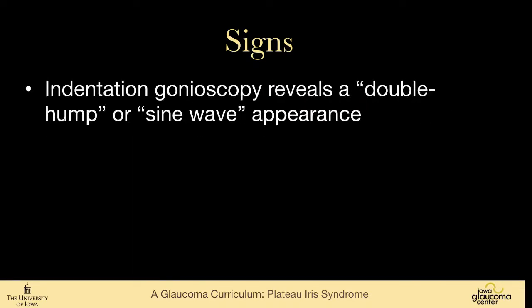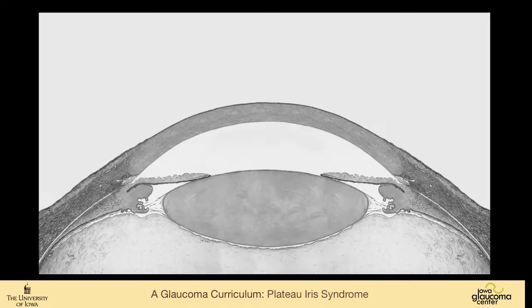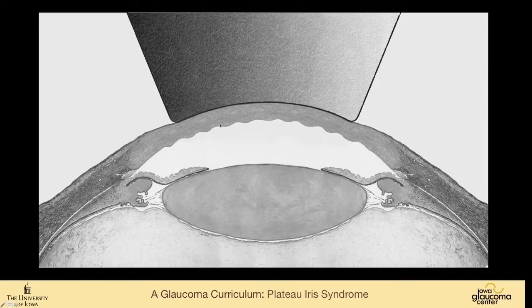The sign is looking on indentation gonioscopy and seeing this double hump or sine wave appearance. When one indents, the iris drapes over the ciliary body. This is a sketch of the anterior chamber of a patient with plateau iris — the ciliary processes are very far forward, the peripheral chamber is fairly deep with a sharp drop-off in the periphery. When we indent this eye, the iris drapes over the ciliary body and then over the lens, giving us this double hump appearance. It's very classic for plateau.